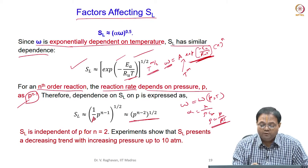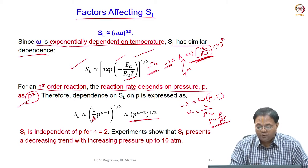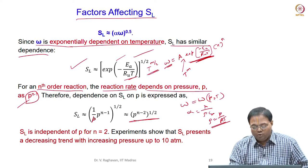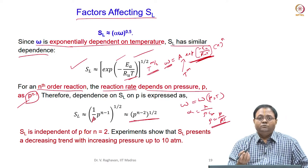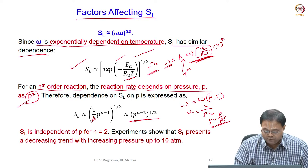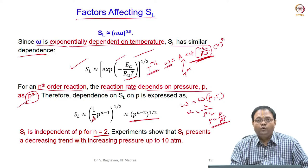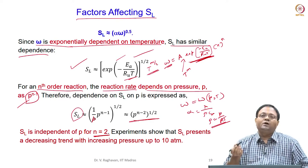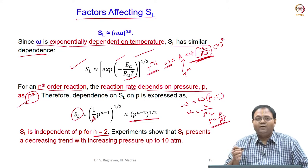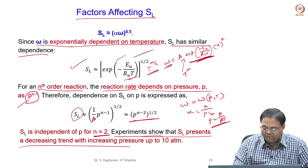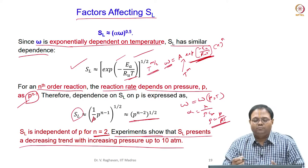So for nth-order reactions, SL varies with pressure as p^((n-2)/2). For second-order reactions where n equals 2, this gives p^0, meaning SL may not depend much on pressure. However, some small dependency is shown by experiments, which show that SL presents a decreasing trend with increasing pressure up to 10 atmospheres where the experiments are conducted.